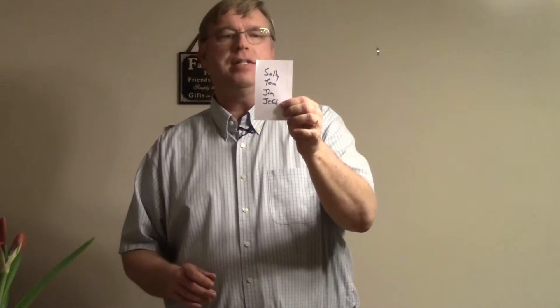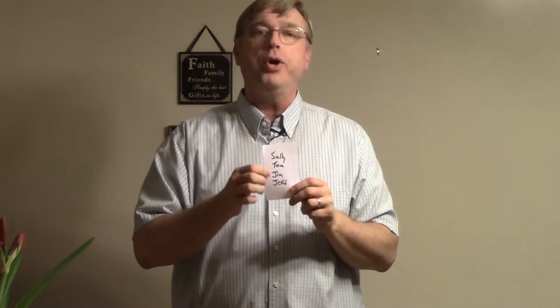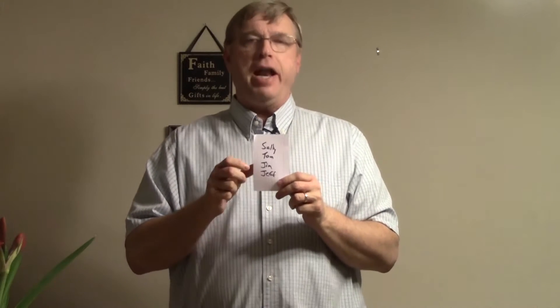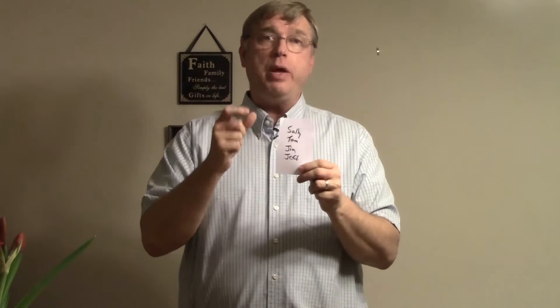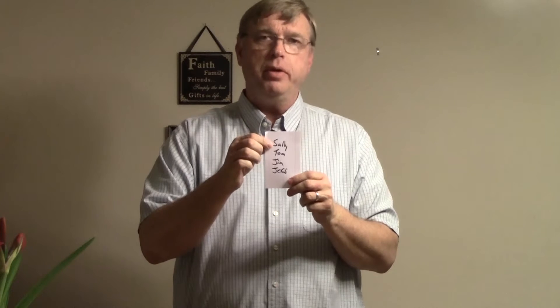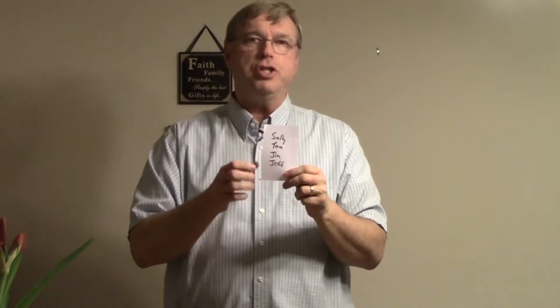So we use instant runoff voting or preferential voting to allow us to simulate having those multiple rounds. A person is able to write on their ballot more than one name. So let's say in this election we have four candidates: Sally, Tom, Jim and Jeff. So instead of everyone just writing one name on a ballot, they actually put the four names in their order of preference. That is why it's called preferential voting. Their favorite candidate, the one that they want the most, they put on top.